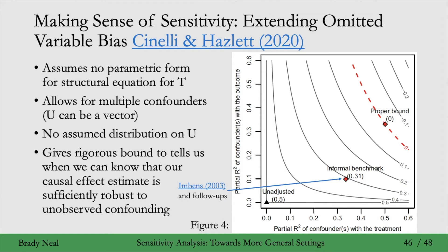In their paper, Cinelli and Hazlett show that this informal benchmarking is misleading because the proper, more formal result would give a bound of 0, which is saying that this estimate is not robust. It's not robust if you have an unobserved confounder similar to the observed covariate that informal benchmarking would make you think it is robust to, because it appears way below the red dashed line. So in their paper they make this argument, but then also come up with bounds so that you can formally know whether your estimate is robust to unobserved confounding under some reasonable assumptions. You can check out their paper — this is figure 4 of their paper — for more information.